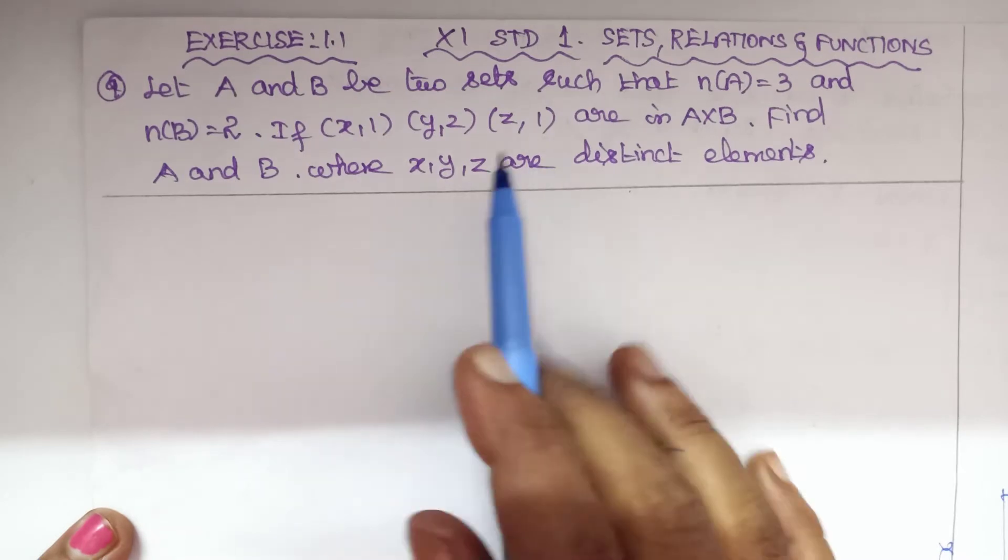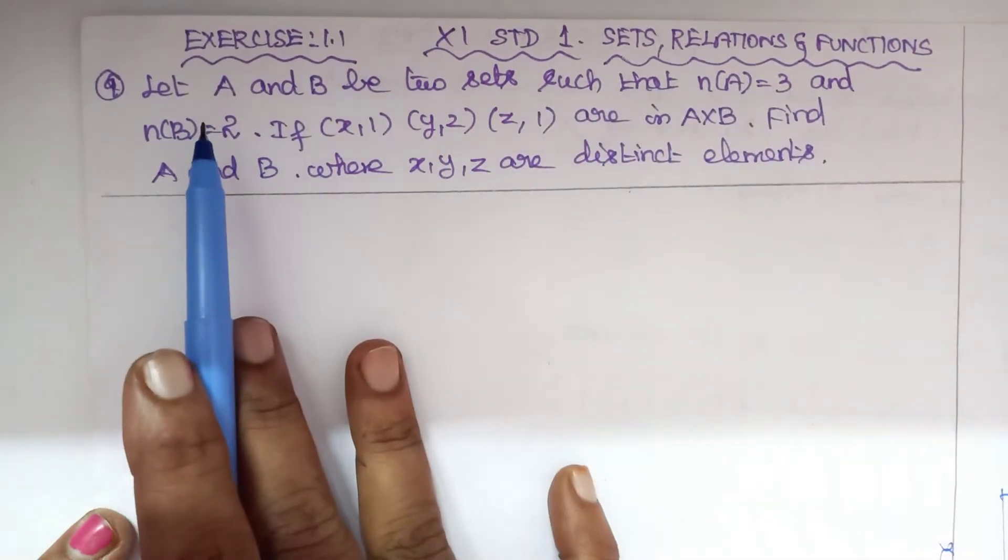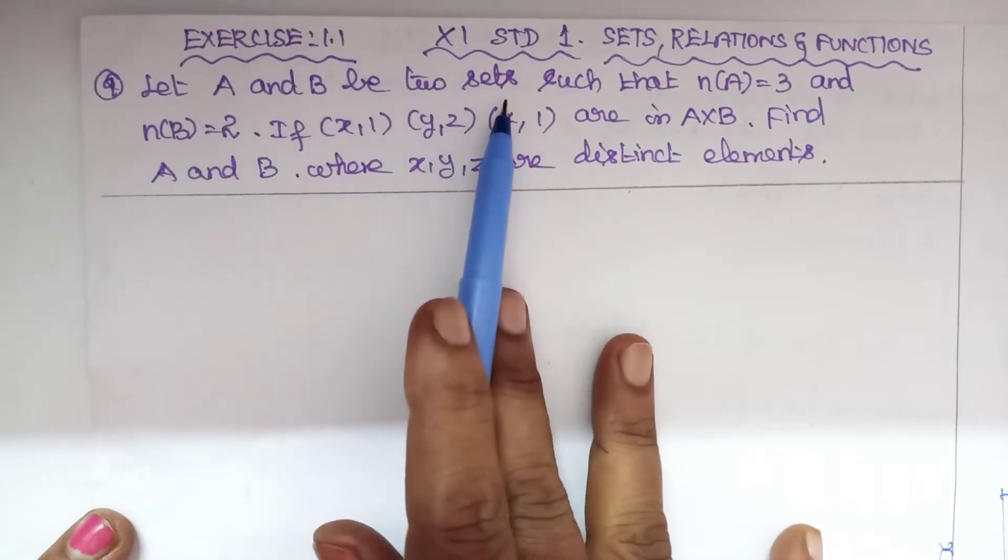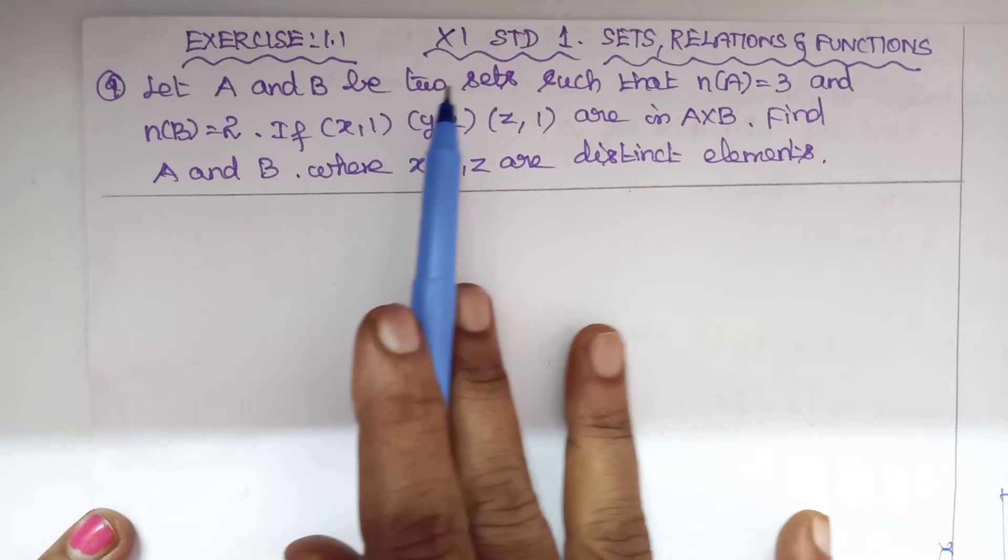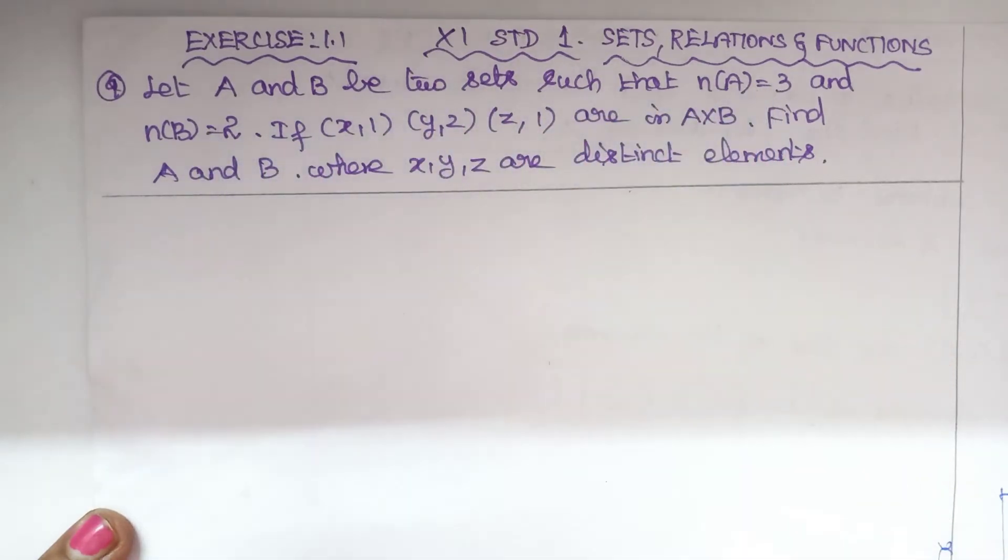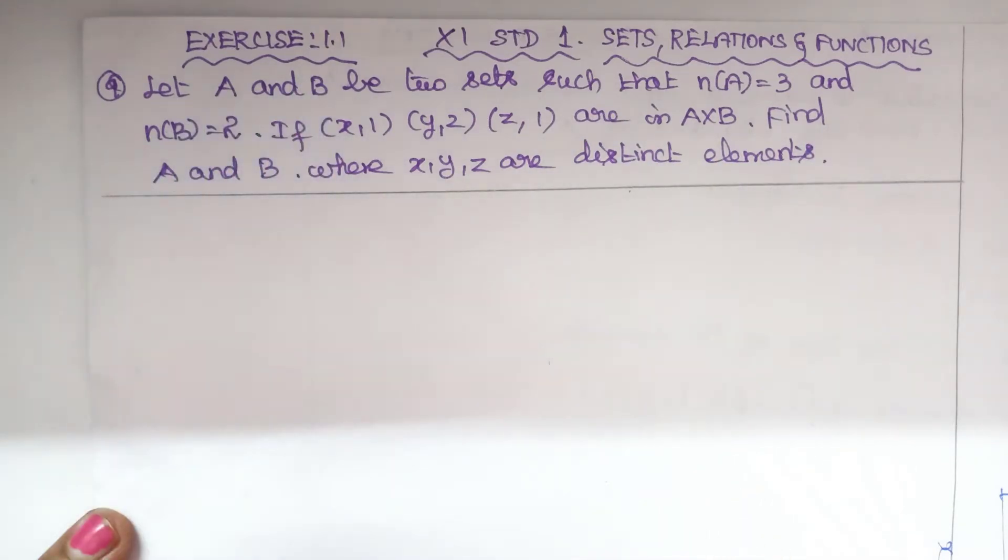Good morning to everyone. 11th standard, first chapter: Sets, Relations and Functions, Exercise 1.1, 9th problem. Let A and B be two sets such that n(A) equals 3 and n(B) equals 2. Set A has three elements and set B has two elements.